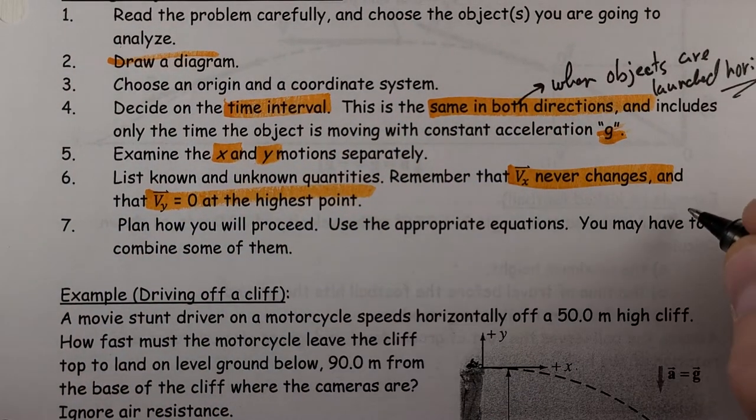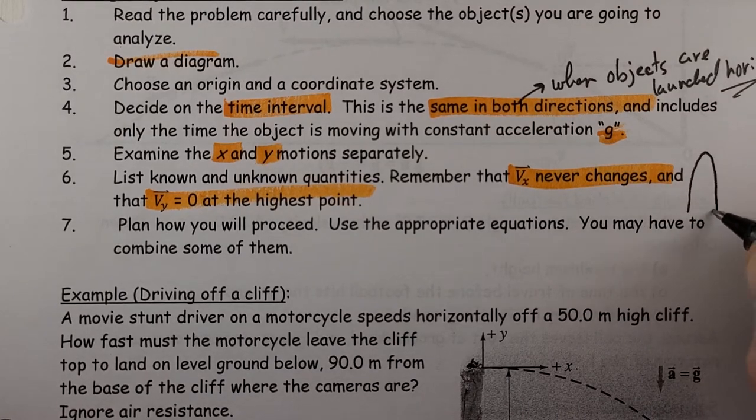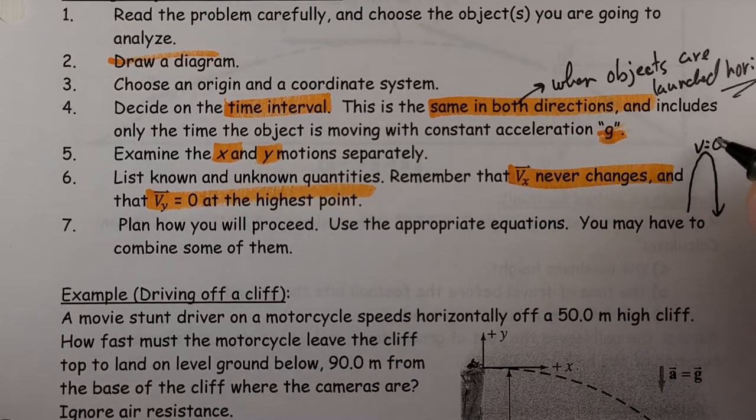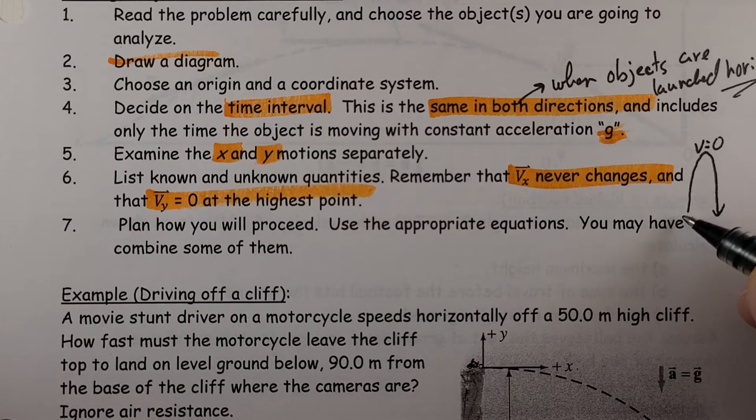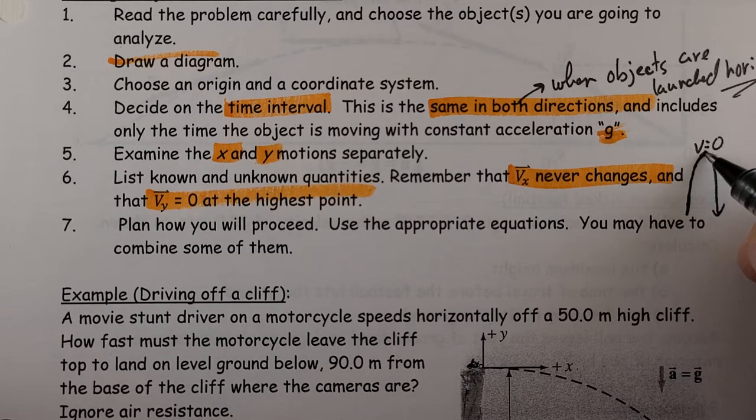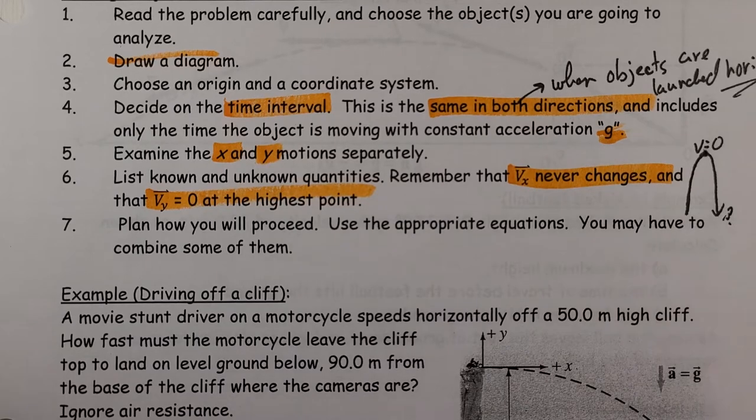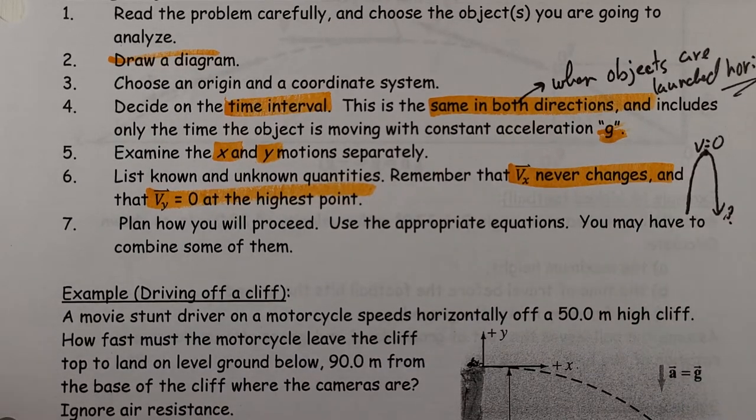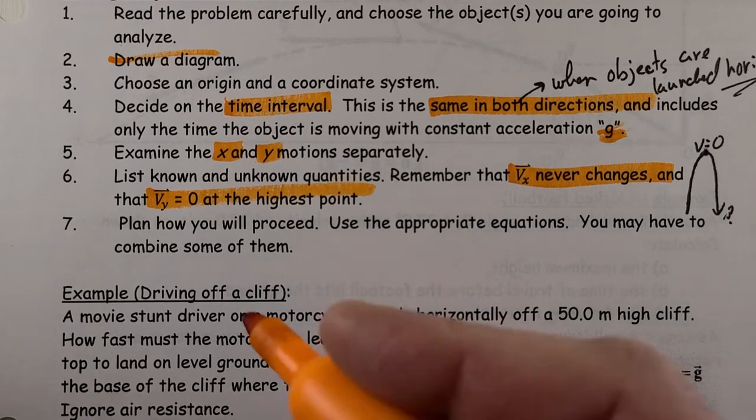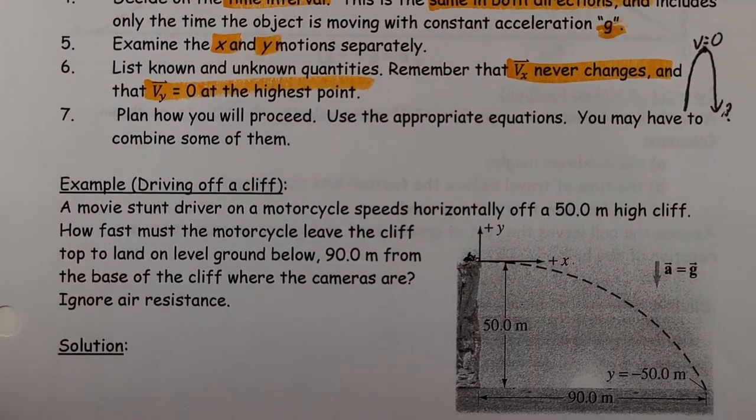Remember back in section 1.5 when we threw things up in the air? The velocity at the very top of the path is zero. At the highest point, the velocity is changing direction, so it is zero. Plan how you'll proceed and use the appropriate equations. You may have to combine some.